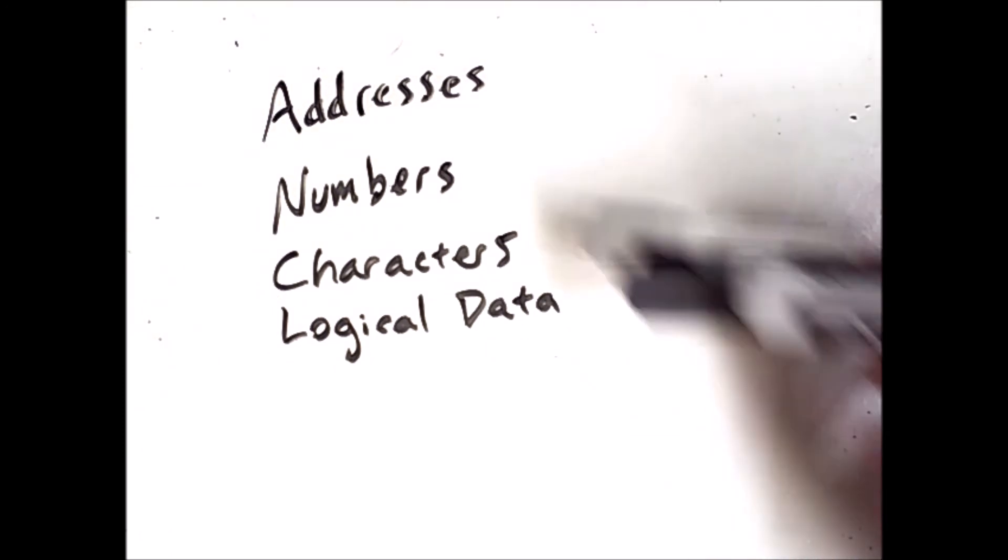We also saw characters, and in the future we'll be working with logical data, which just means that we're looking at the bits and interpreting them as indicating some other kind of information, such as the presence or absence of something, using ones to represent true and zero to represent false, or using them to represent some other sort of data that is not strictly numbers or addresses or characters.